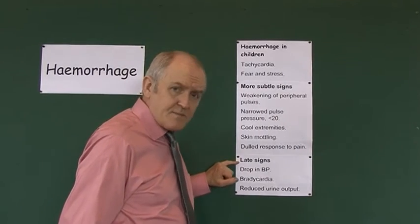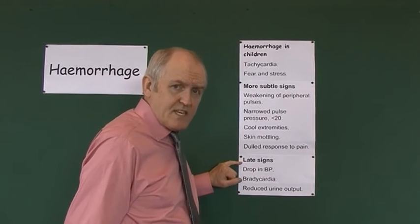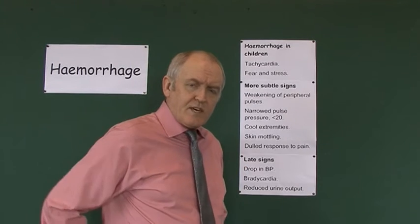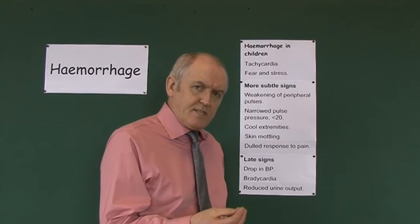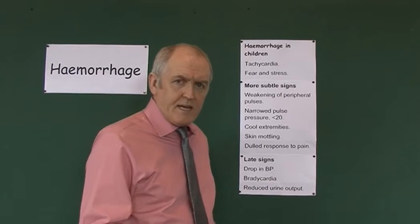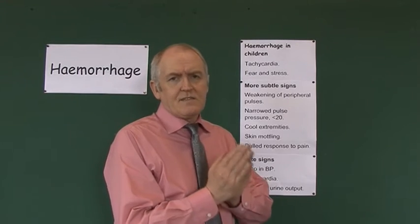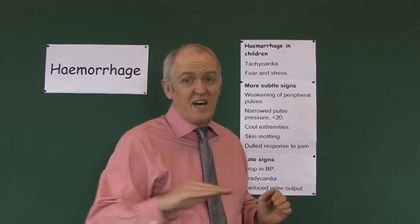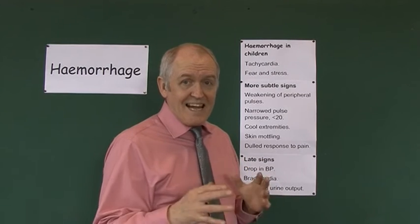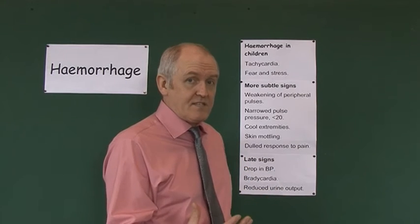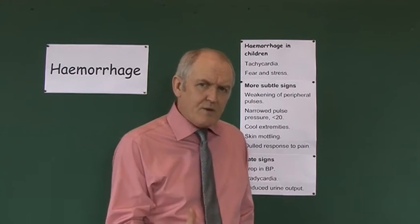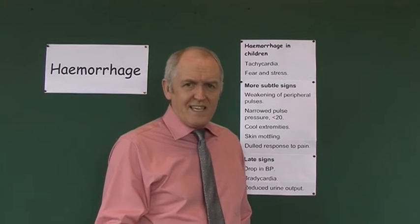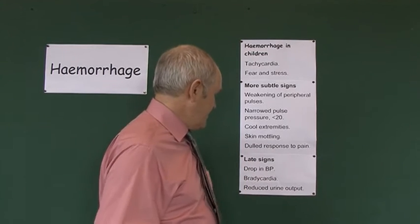Later signs — and these are very late signs — include the blood pressure dropping. As we've said, children are brilliant compensators, so if the blood pressure is starting to drop even by more than a tiny bit, this means the child is in a fairly advanced state of shock. Hypotension in a haemorrhaging child is a really significant, dangerous clinical feature.